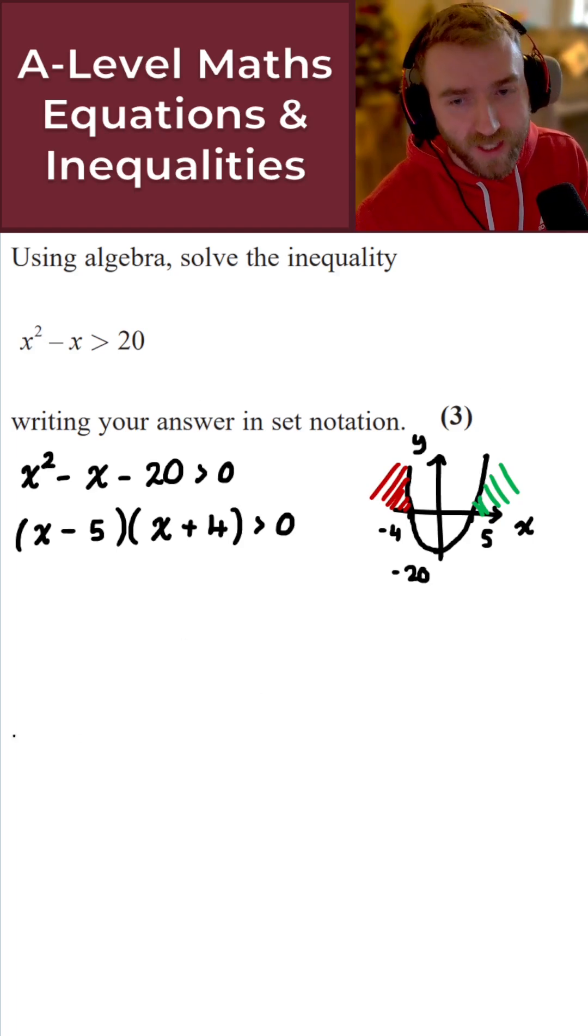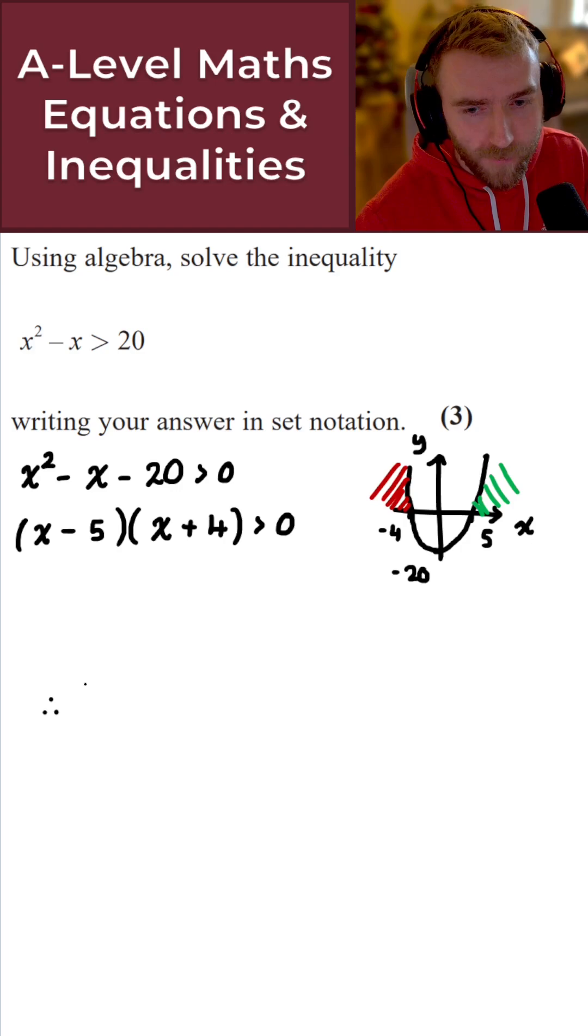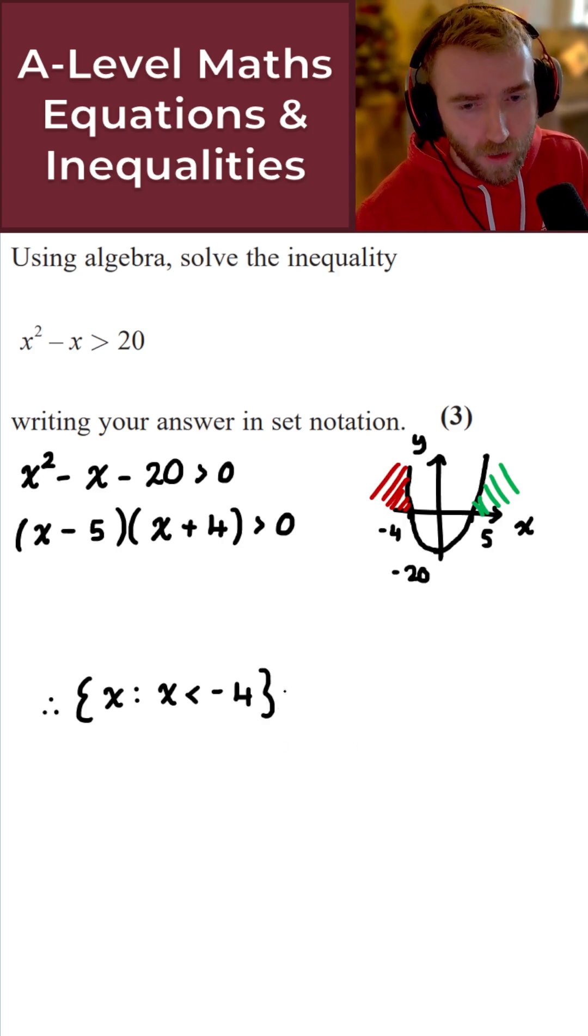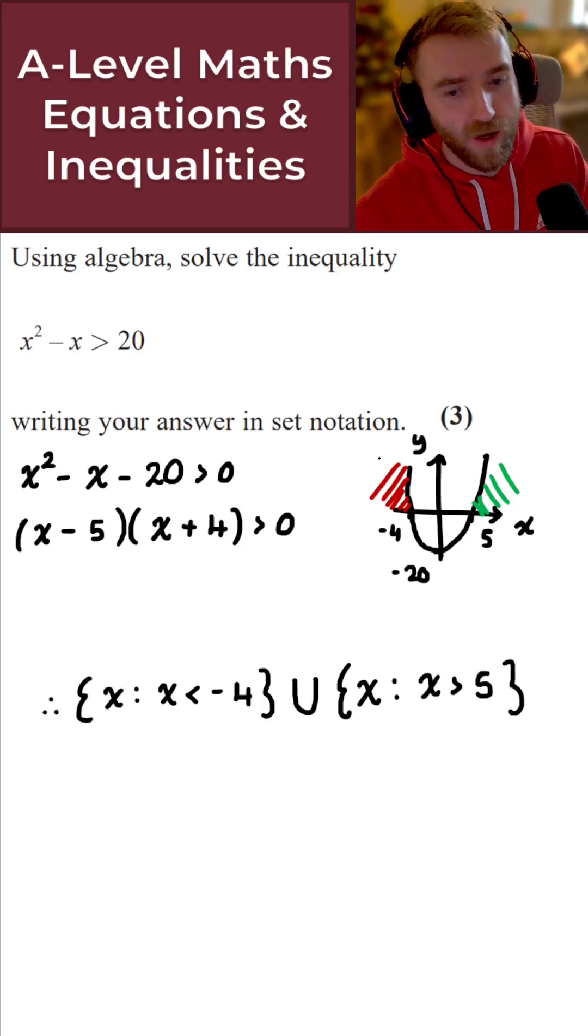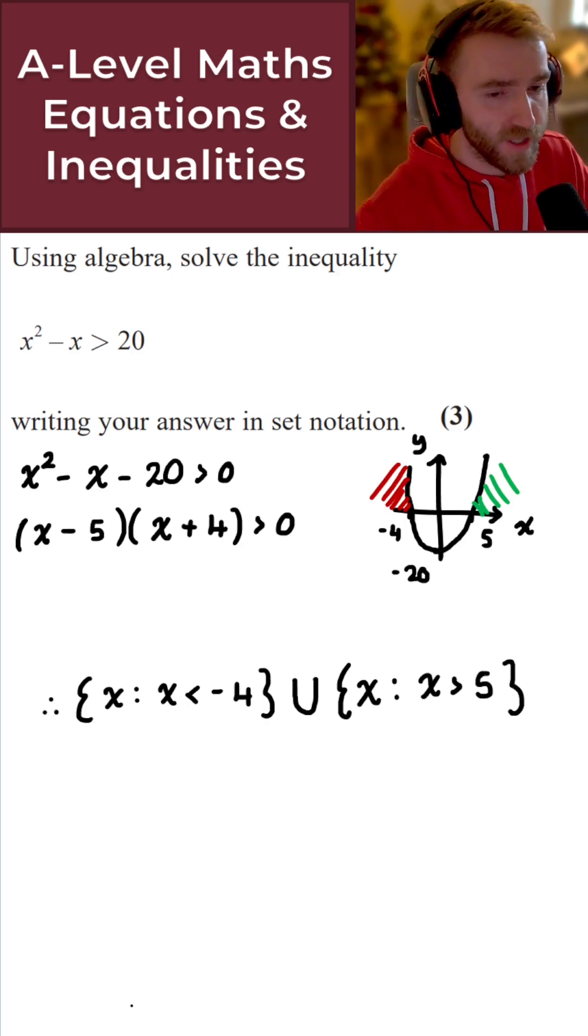So if we give the answer here in set notation, then what do we get? So we have our curly brackets here for x. What we're saying then is x here must be strictly less than minus 4. Or what we can also say here, we use the union here of these two sets. So union then, again for x here. And this is for x being strictly greater than 5. And there we go. That gives us the solution here for today's question. Thank you.